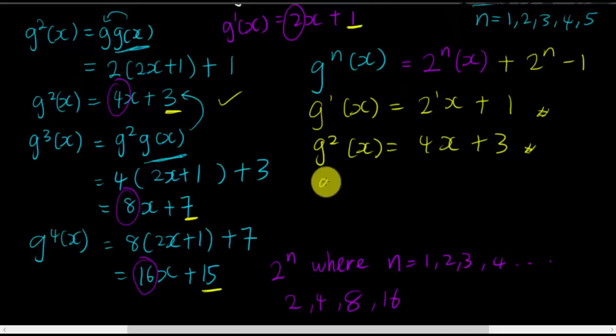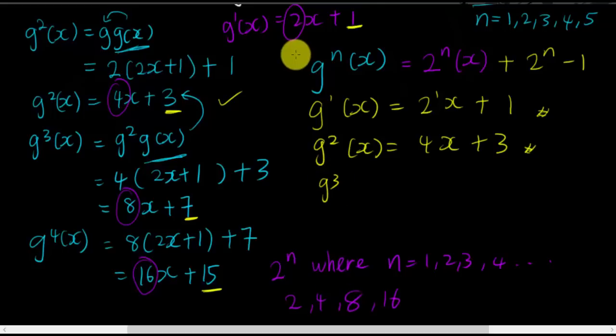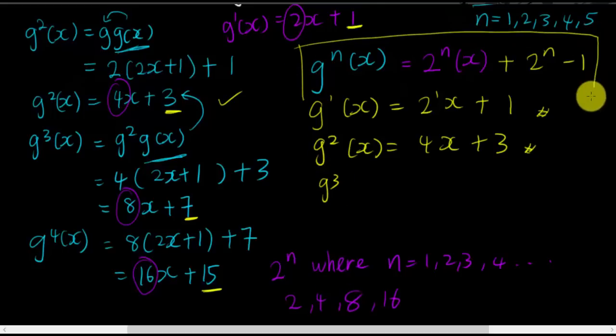Verifying: for g¹(x), n=1, so 2^1 · x + (2^1 − 1) = 2x + 1. Correct. For g²(x), n=2: 4x + 3. For g³(x), n=3: 8x + 7. So the final answer is g^n(x) = 2^n · x + (2^n − 1).